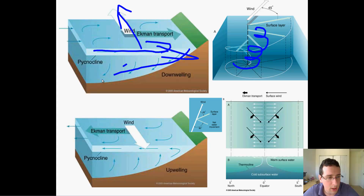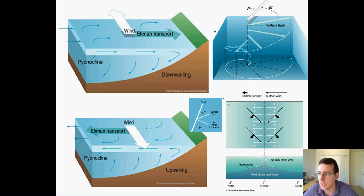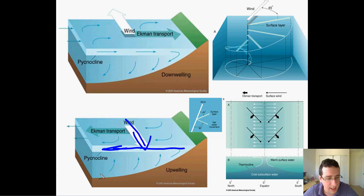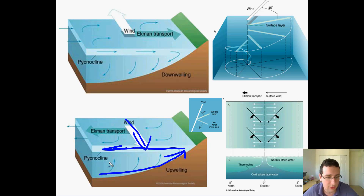If the water is moving toward the continent, it's going to be forced downward — this is called downwelling. But if the transport happens in the opposite direction, with wind blowing the other way, the transport will be at a 90-degree angle pulling water away from the continent. That water must be replaced, so bottom water rises to replace it — this is called upwelling.